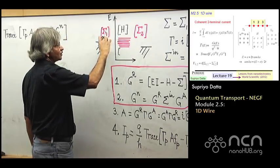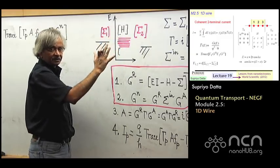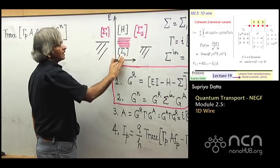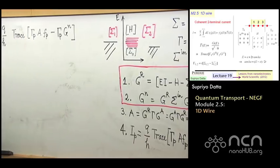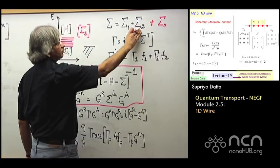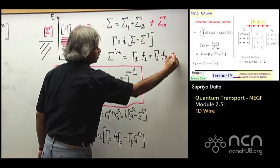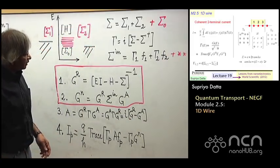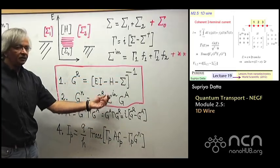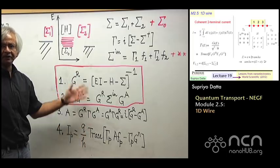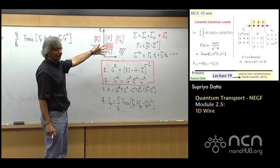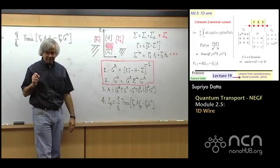The reason I didn't list it in the basic set of equations is that it's not completely general. It doesn't always work, whereas these equations you never have to revisit. There are problems where people want to include some amount of interactions with the surroundings. This is the elastic resistor where electrons are going straight from contact one to contact two. But you could also analyze channels where there is some interaction with the surroundings described by some sigma zero.